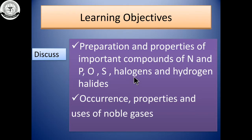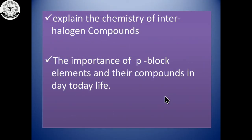Halogens are fluorine, chlorine, bromine, and iodine. Hydrogen halides are HF, HCl, HBr, and hydrogen iodide. We will also discuss the properties and uses of noble gases, and explain the chemistry of interhalogen compounds — where halogen compounds combine to form an interhalogen compound.